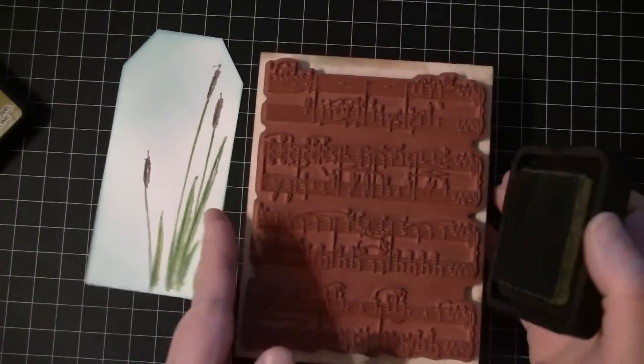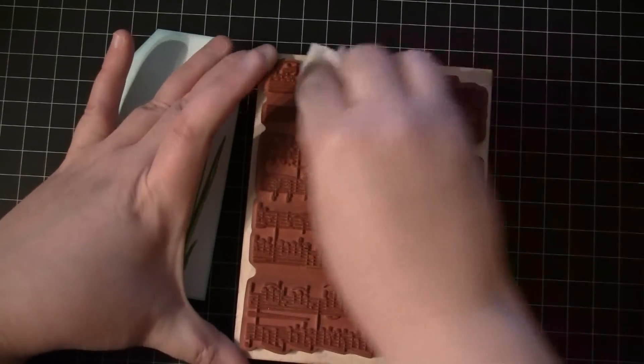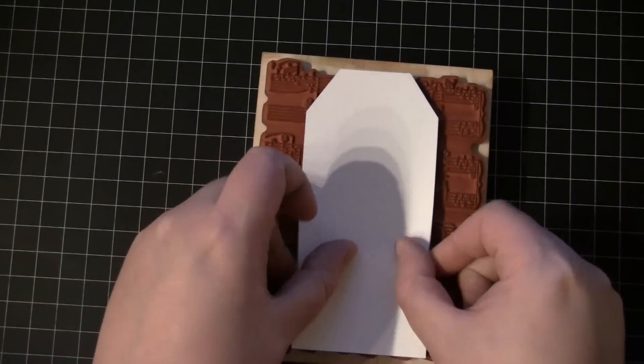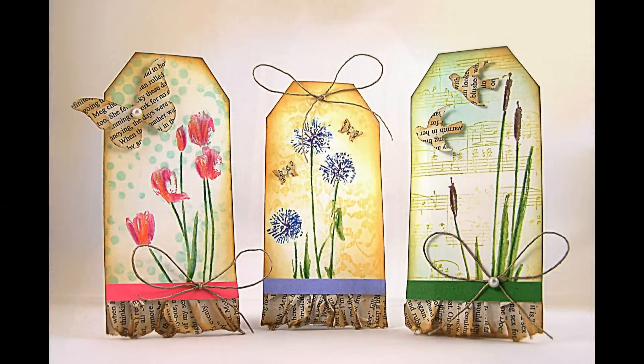Now this background stamp has finer detail to it, so I wasn't as concerned about using Versamagic ink. So I used Distress Ink in the color of Crushed Olive and stamped it right onto the tag.